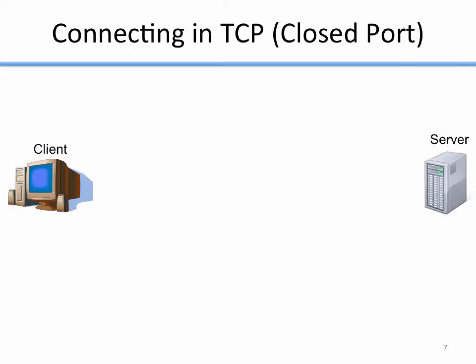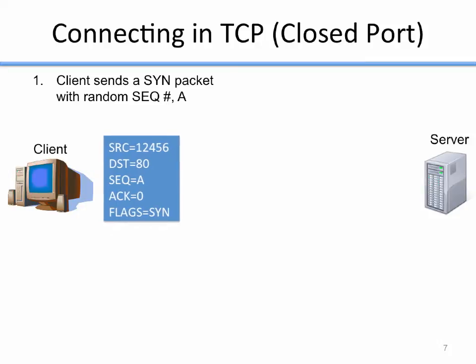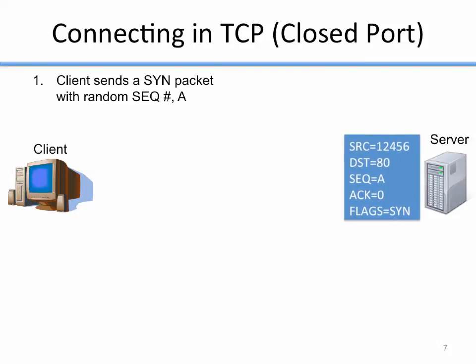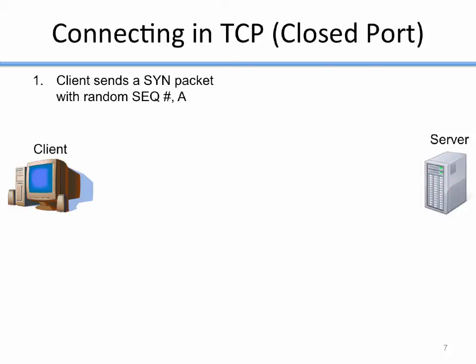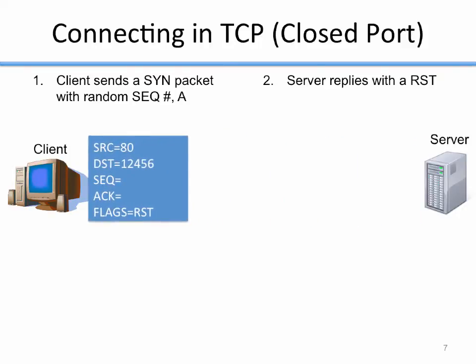If I'm trying to connect to a closed port, the first step is the same: the client sends a SYN packet with a random sequence number to the server. In this case, the server sees the packet and says this port's not open, so it replies with a reset — sending the reset back to the client to indicate there's no service on that port.